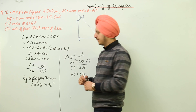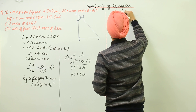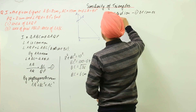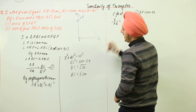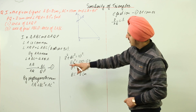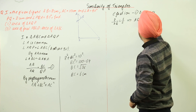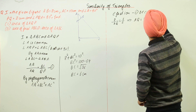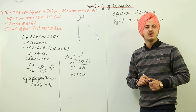Now substituting into the ratio equation: AB over AQ equals BC over QP, which gives 8 over AQ equals 6 over 2. Solving, AQ equals 8 × 2 ÷ 6, which equals 8 by 3 centimeters.